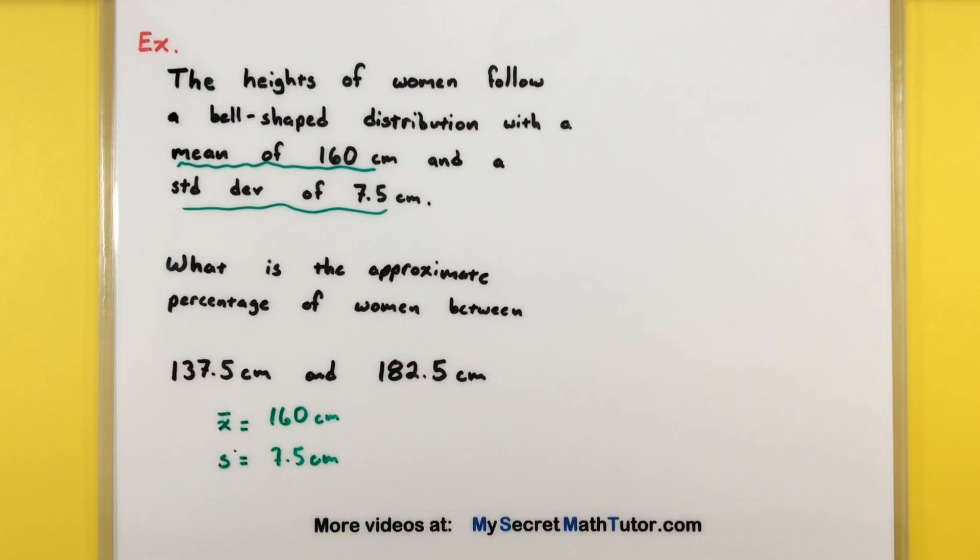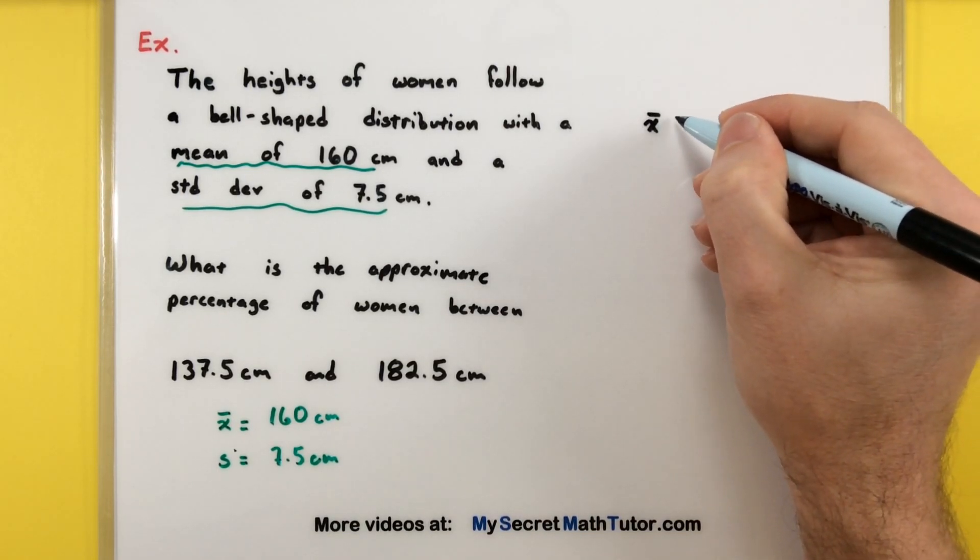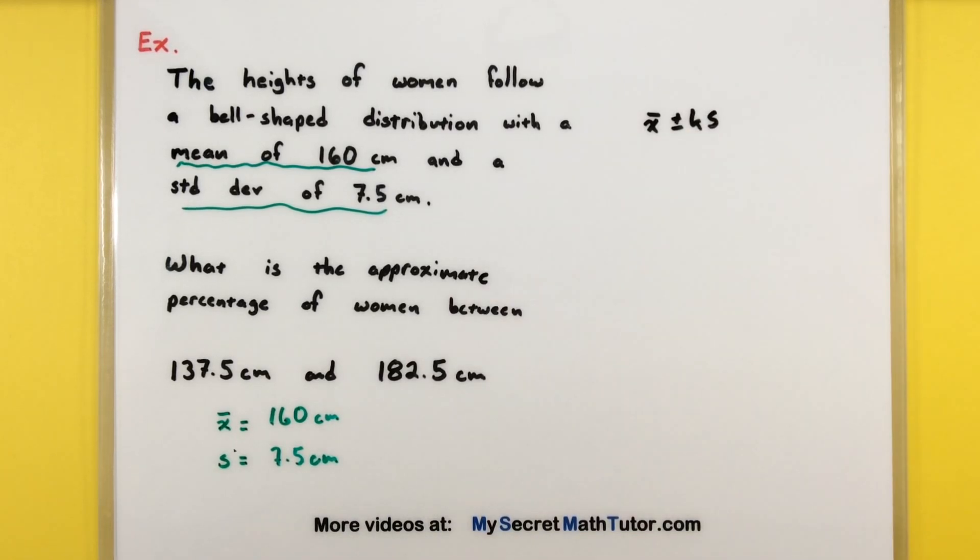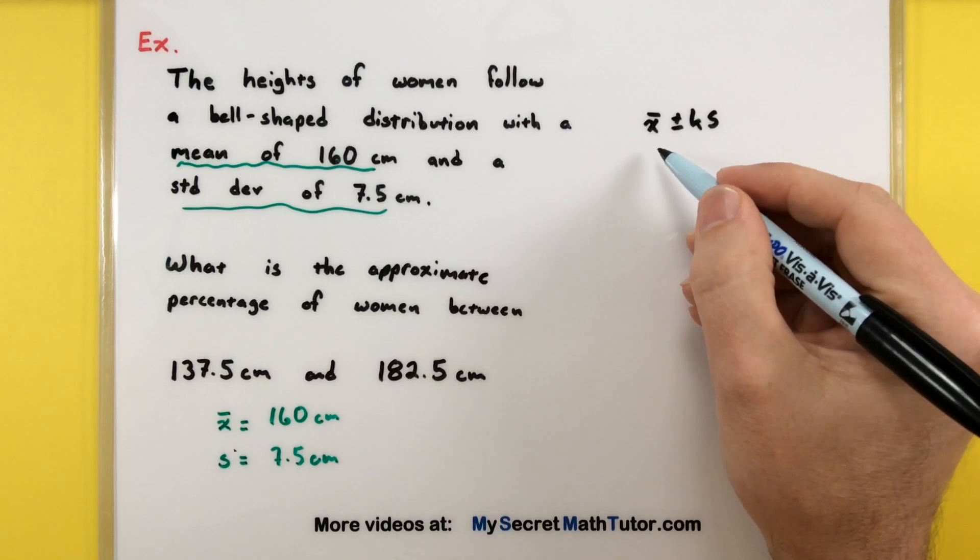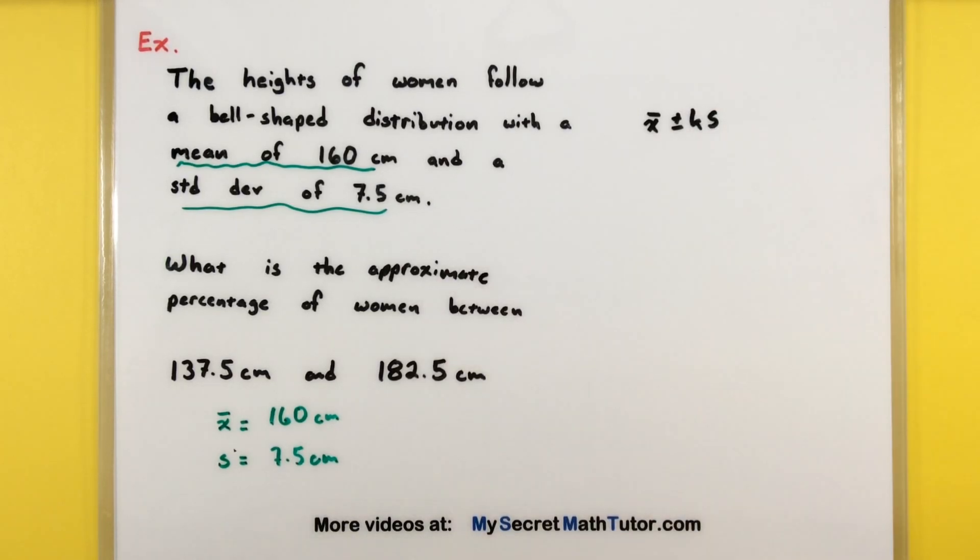We're given a range and we're backtracking, trying to figure out what that percentage is. Since this is a bell-shaped distribution, we're still going to think of the mean and either add or subtract some number of standard deviations and connect that into our range. Let's use the upper range because that will allow us to figure out how many standard deviations we are away.